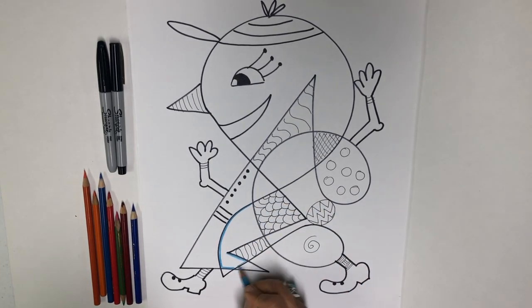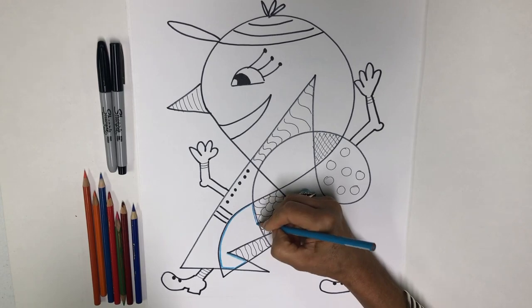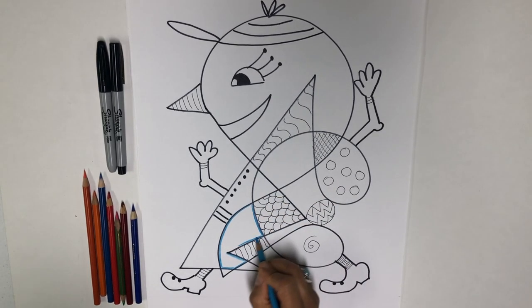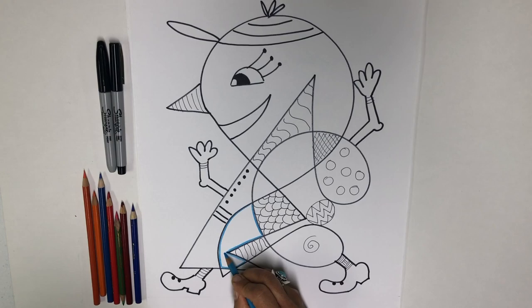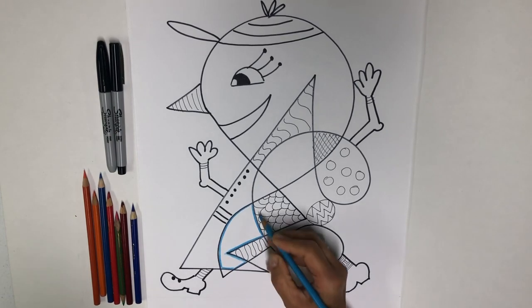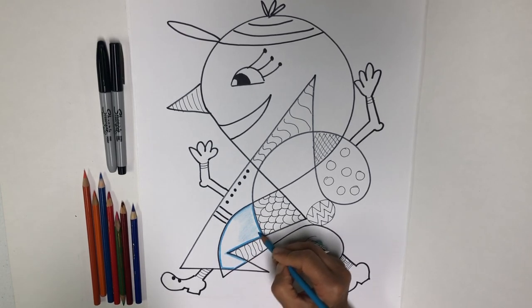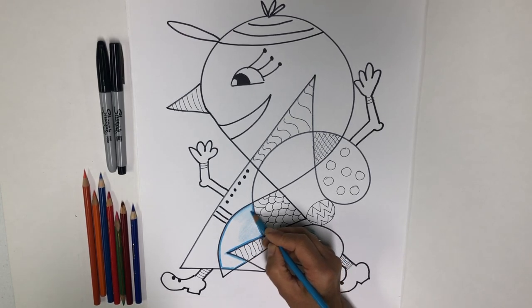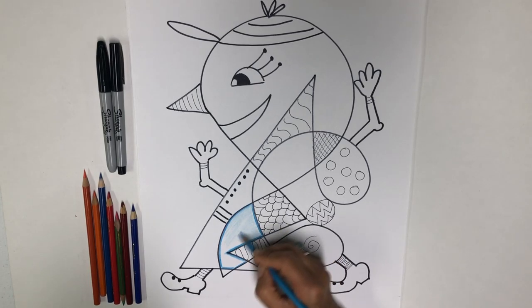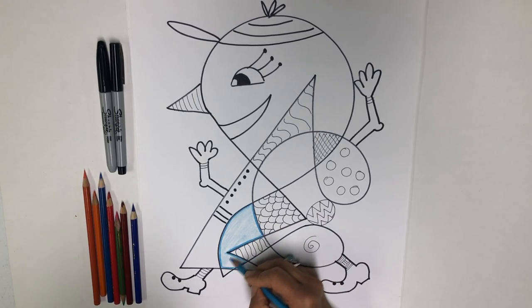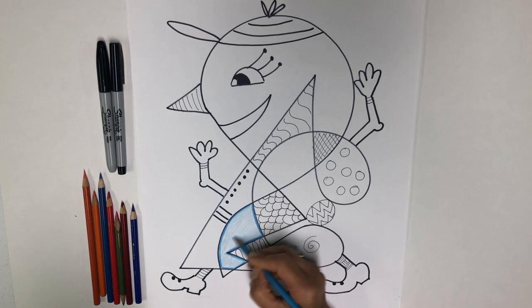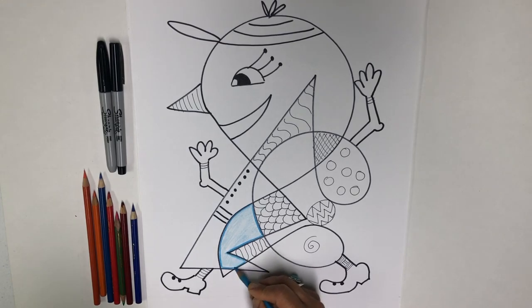And once I've done that, then I am going to color the inside of that shape with a lighter shade of that same color. And I'm going to repeat that in all of the different areas of our silly creature.